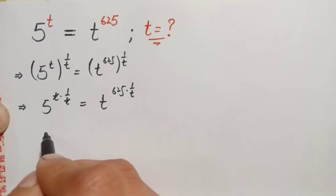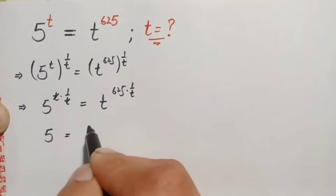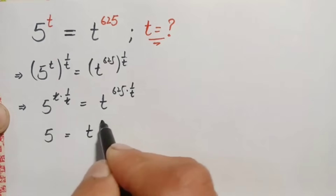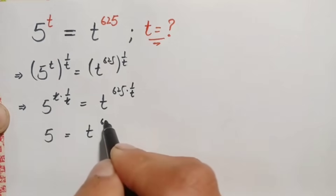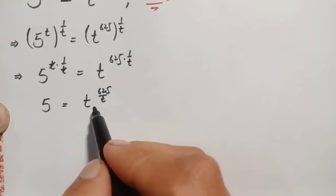So this becomes 5 is equal to t raised to power 625 divided by t. Now what we will do here is try to eliminate the power 625 from the right-hand side.